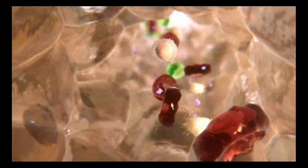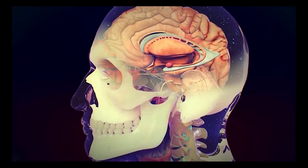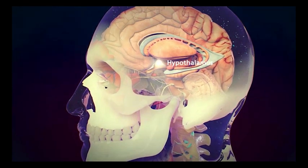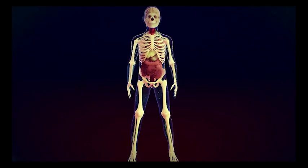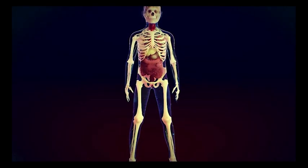The pituitary secretes a variety of hormones, such as growth hormone and thyroid-stimulating hormone. The pituitary itself is controlled by a small brain region called the hypothalamus. Growth hormone regulates bone and muscle growth and physical development.